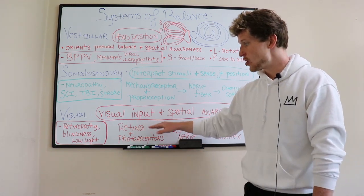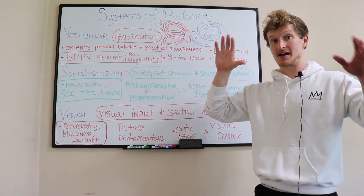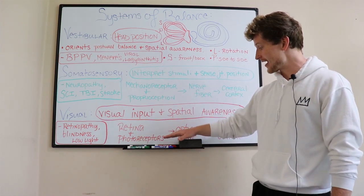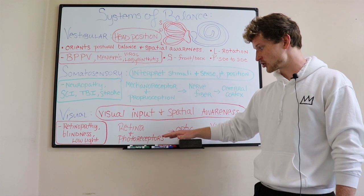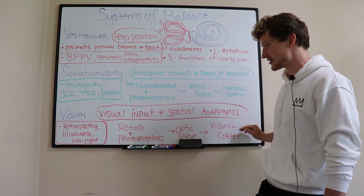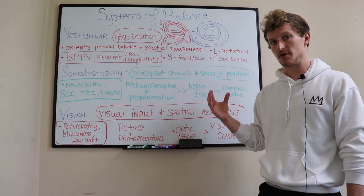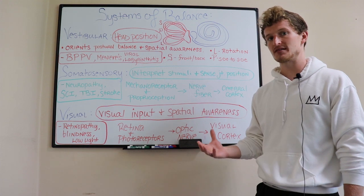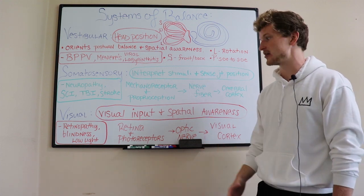We have a retina which receives light from the external environment. Those photoreceptors turn that light into an electrical signal, which travels on our optic nerve to our visual cortex, which gives us that visual image when we're looking around at things and allows us to interpret where we are in space and our proximal stability through our balance.